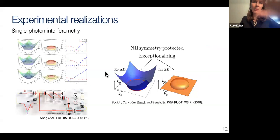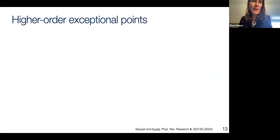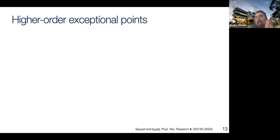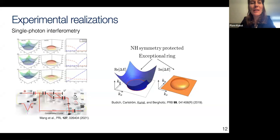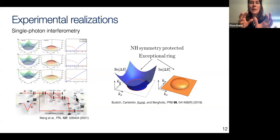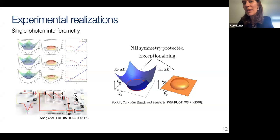These symmetry-protected exceptional structures have been observed in experiments. In a single-photon interferometry experiment they realized exceptional rings that were proposed in a PRB paper. The experiment can be thought of somewhat like a quantum walk, where a photon is sent in and the non-Hermiticity is captured in the transfer matrix parameter, mapping the non-Hermitian Hamiltonian via a time evolution U = e^(iHt).